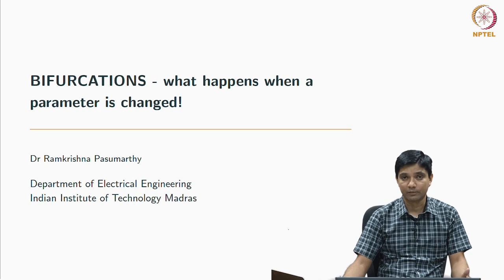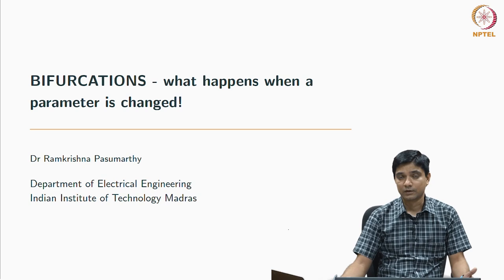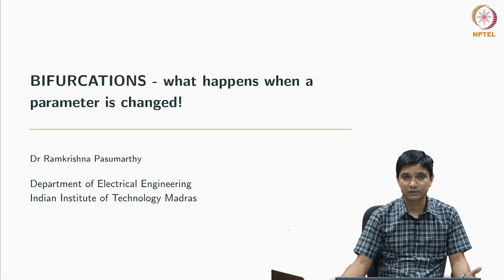We also saw stability analysis via linearization of a non-linear system — what we traditionally call the Jacobi linearization — and how the local behavior around an equilibrium point is related to the linear approximation around that point. We characterized equilibrium points by names depending on where the eigenvalues of the linearized system lie, especially in the second order case: nodes, focus, center, stable nodes, unstable nodes, stable focus, unstable focus, and so on.